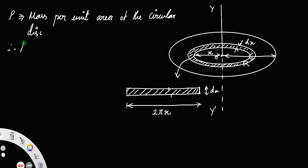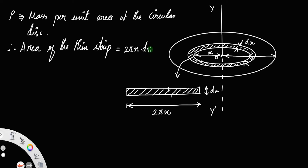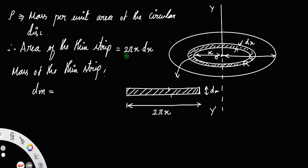Therefore, the area of the thin strip will be length into breadth, that is 2πx into dx. The mass of the thin strip, let us call it dm, is equal to area into mass per unit area. So dm equals 2πx·dx into the mass per unit area of the disk.